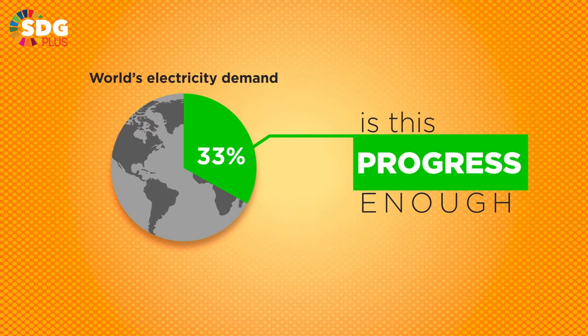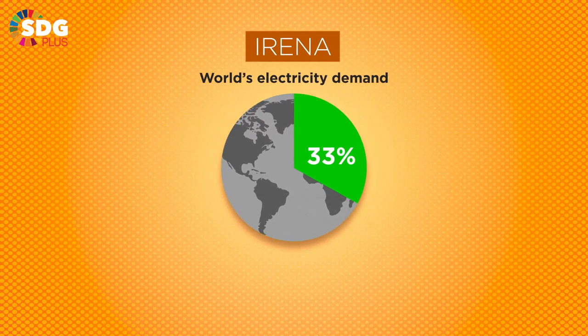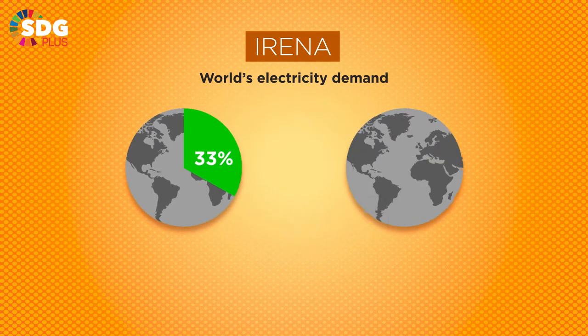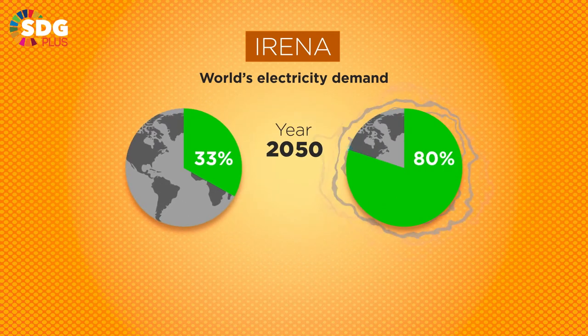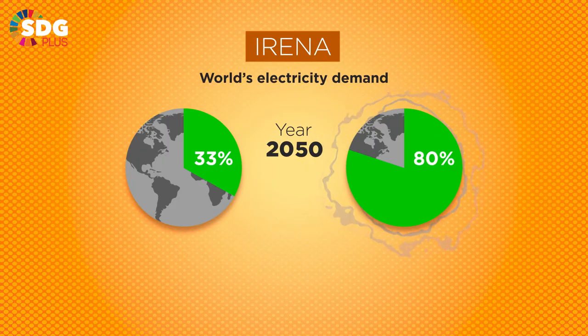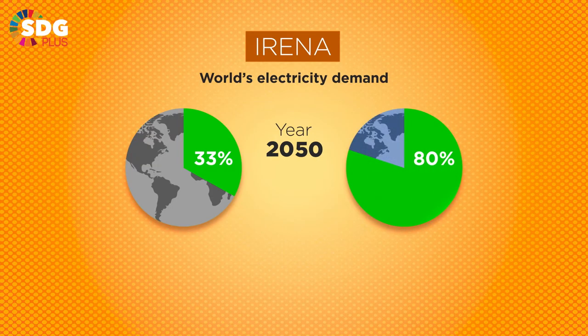So, is this enough? The International Renewable Energy Agency suggests that renewable energy will need to supply 80% of the world's electricity by 2050 to drastically decrease greenhouse gas emissions and prevent climate catastrophe.